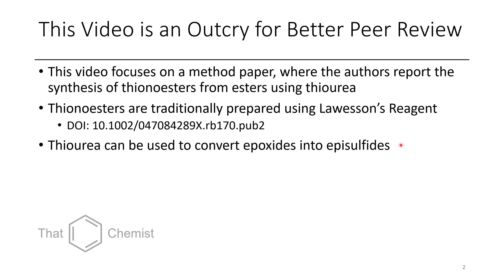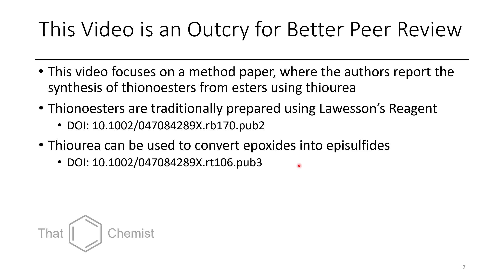If you do want to use thiourea to put sulfur onto something, you can take an epoxide, and upon treatment with thiourea, this will convert epoxides into episulfides — the sulfur version of an epoxide. Here's a reference you can look at if you wanted to do this type of transformation.